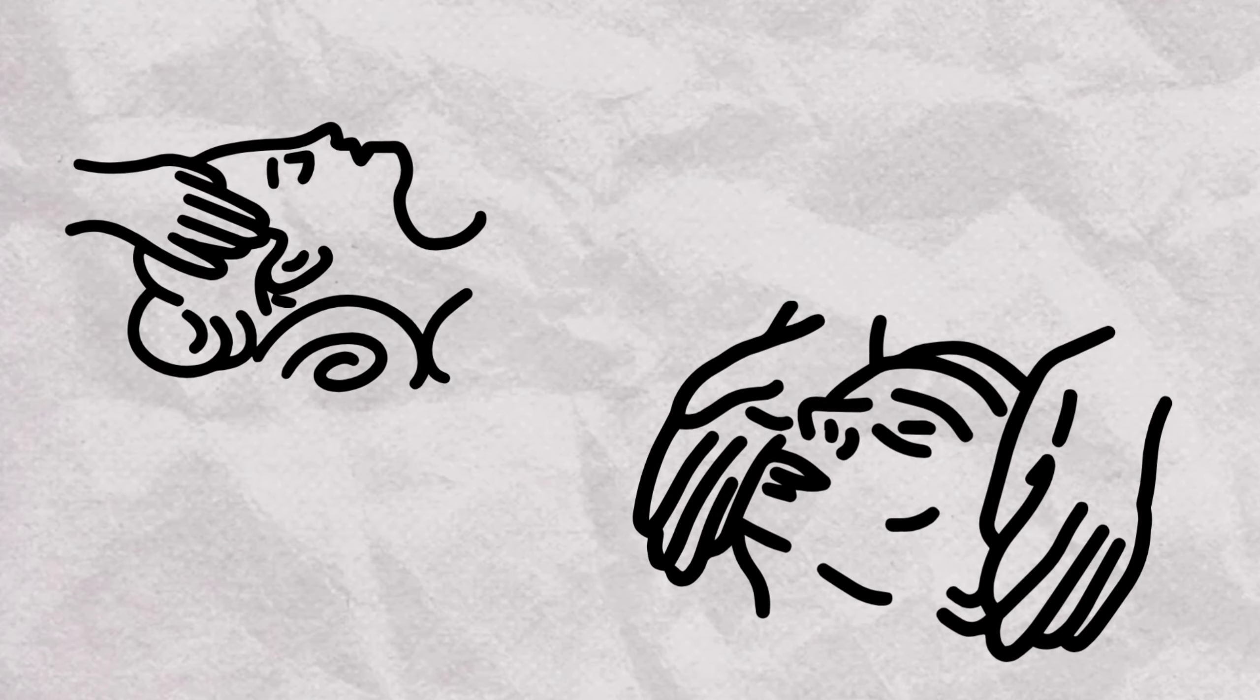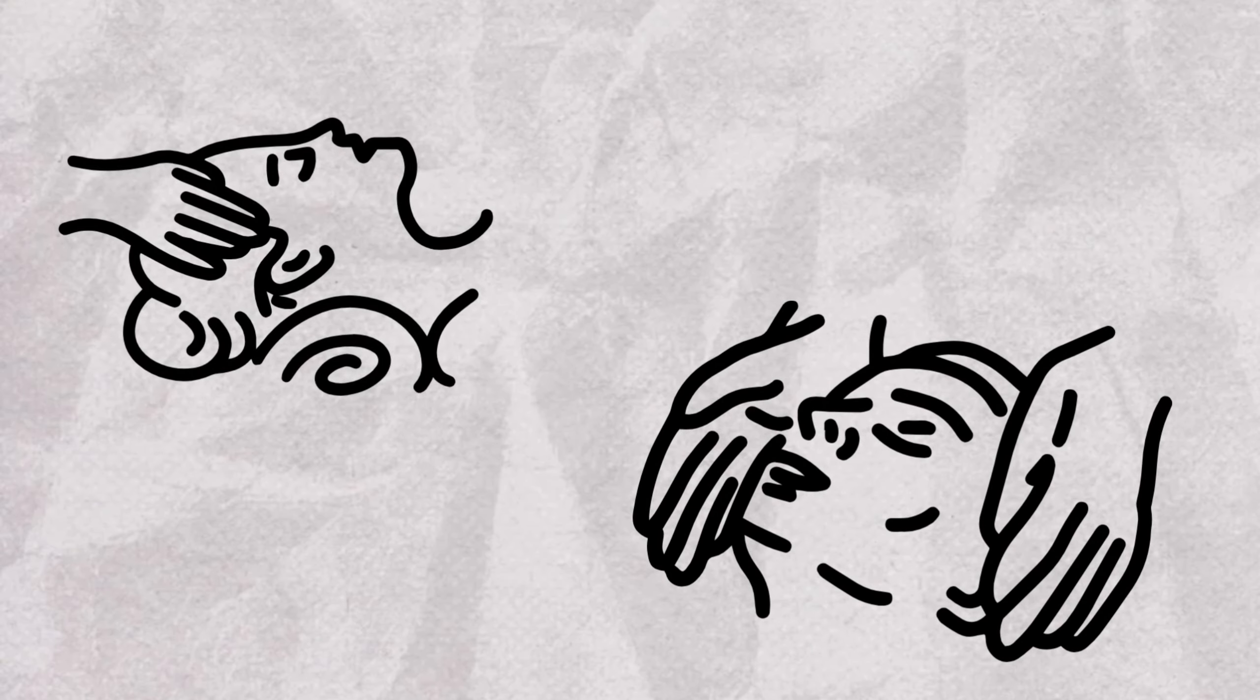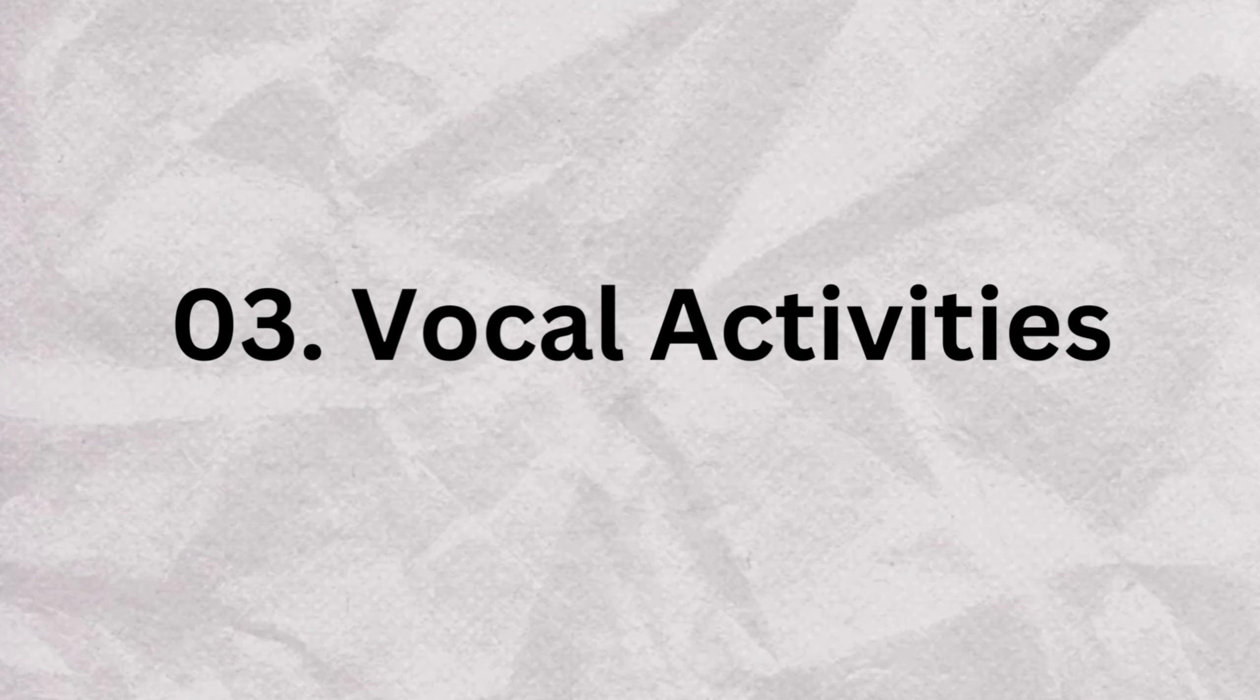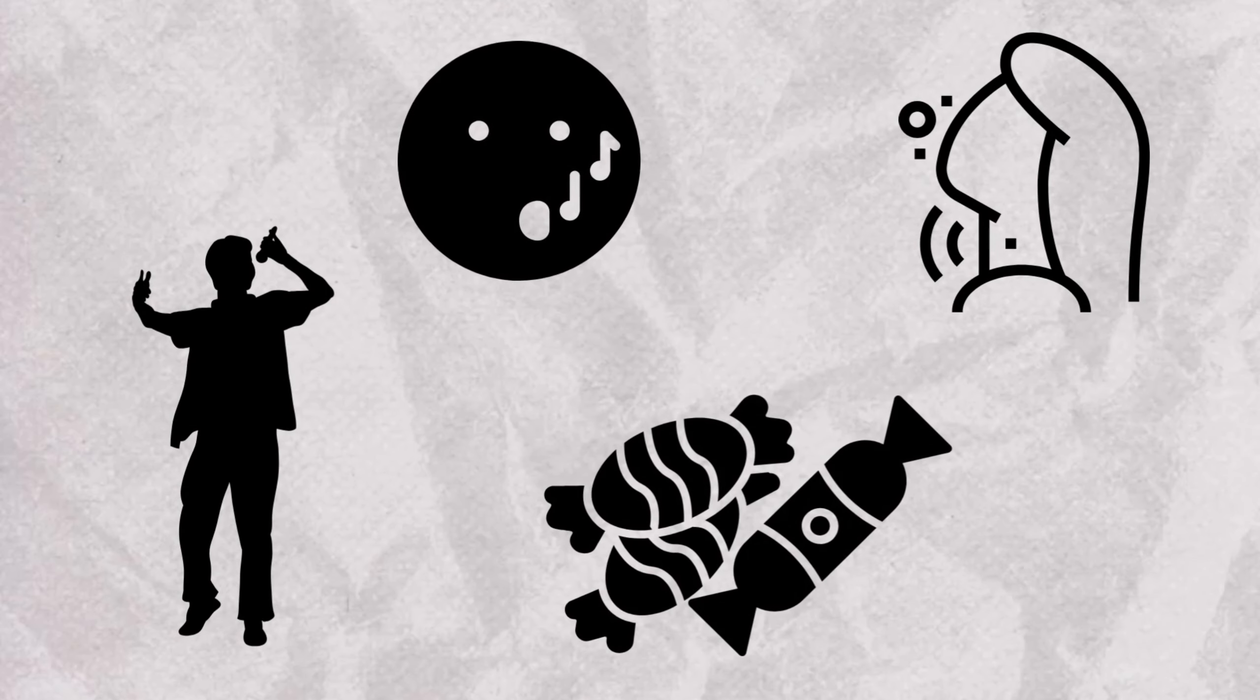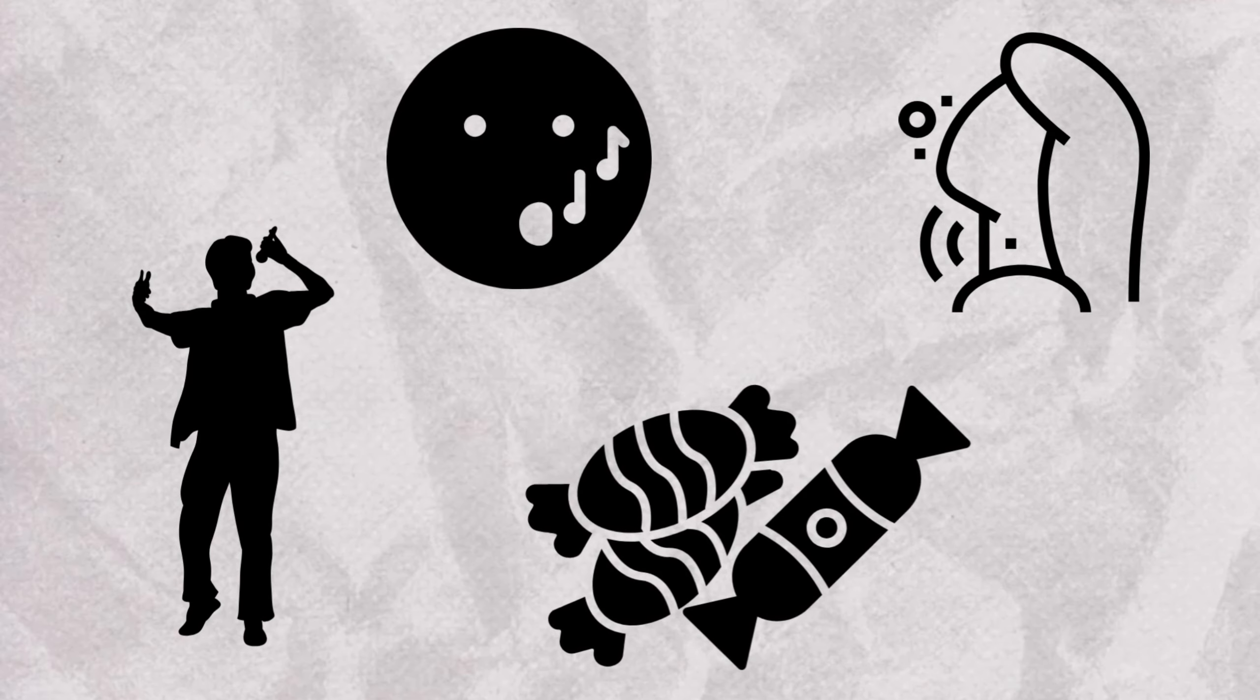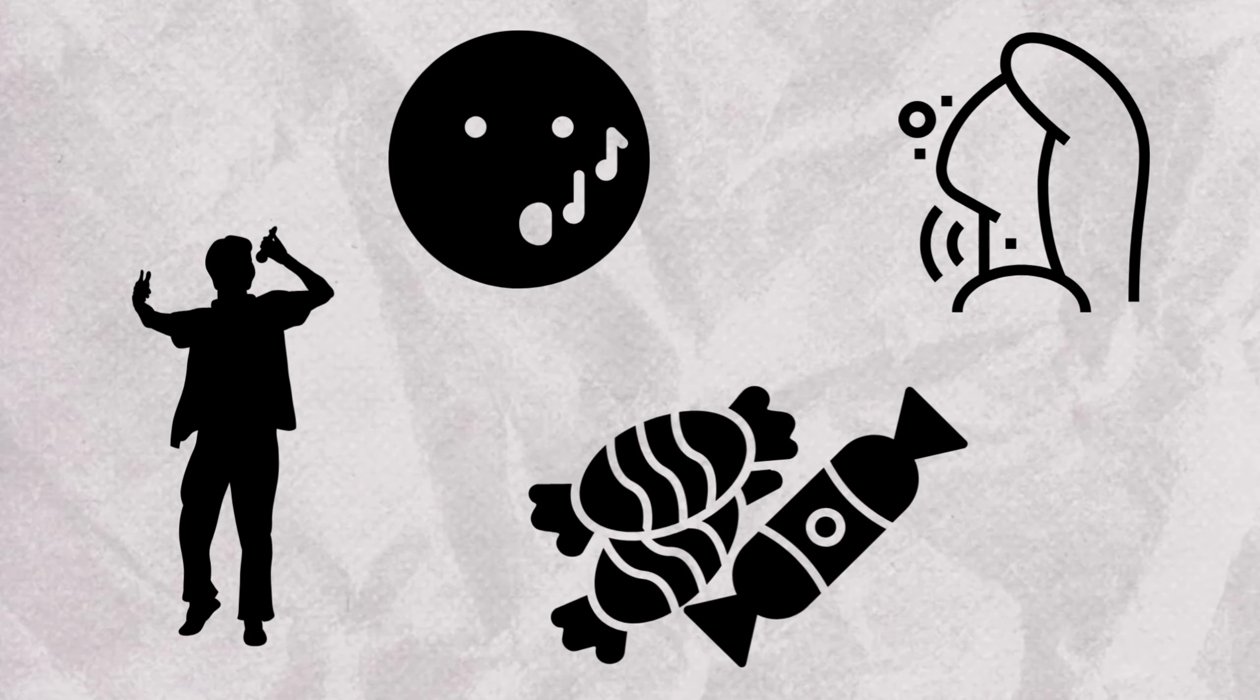Number three: Vocal activities. Singing, humming, gargling, sucking on hard candy, or chewing gum can stimulate the vagus nerve. These activities activate the vocal cords and throat muscles, promoting vagal tone.